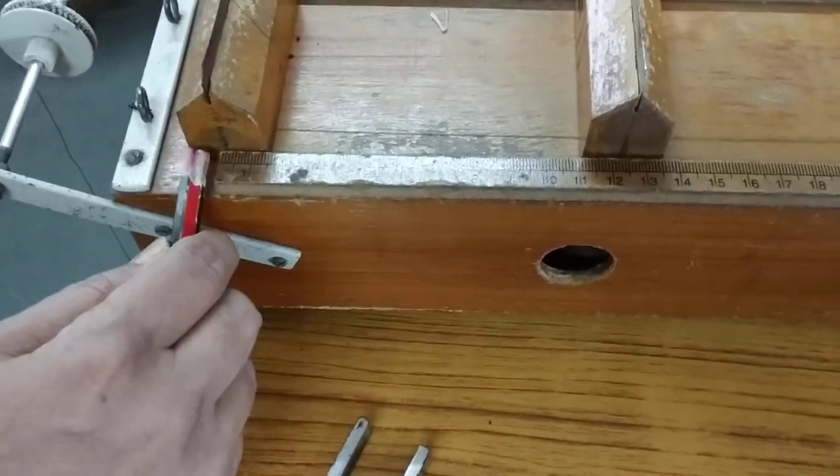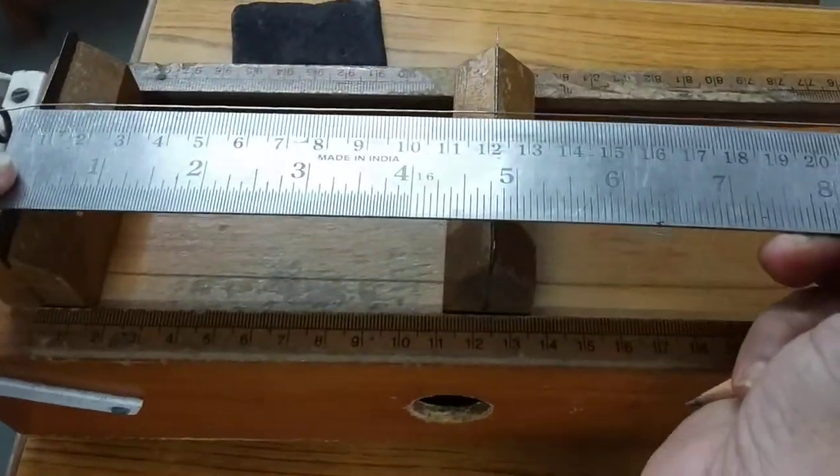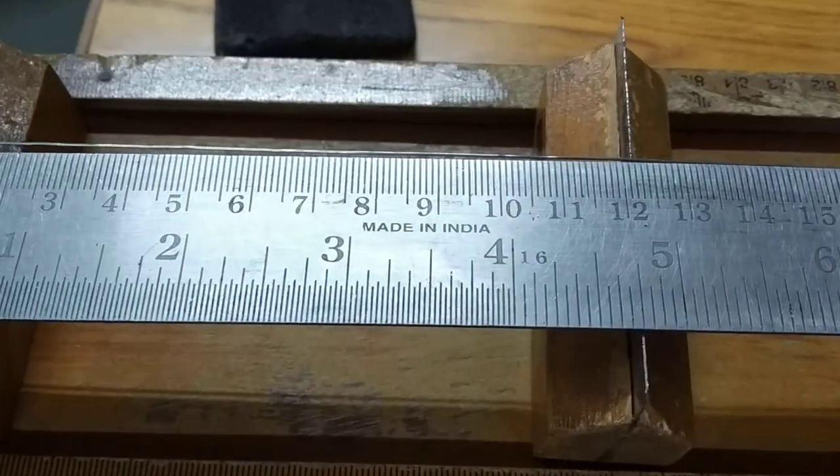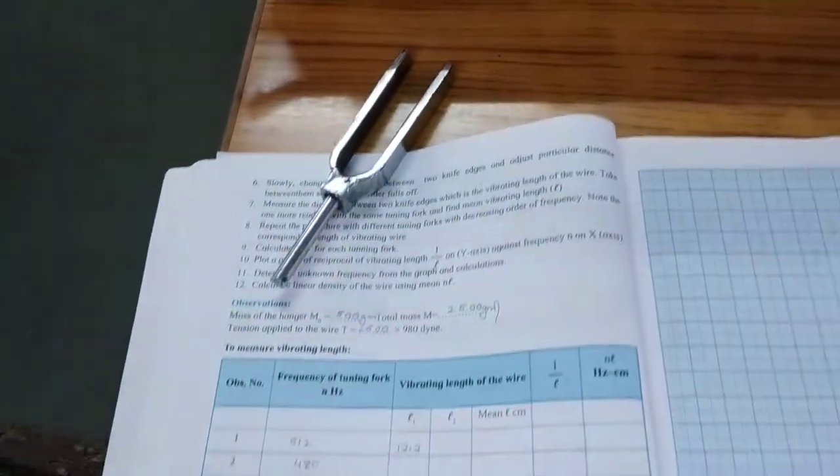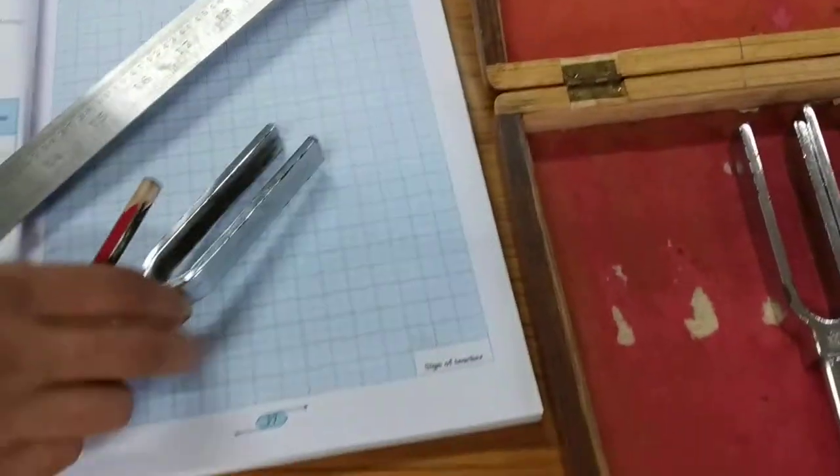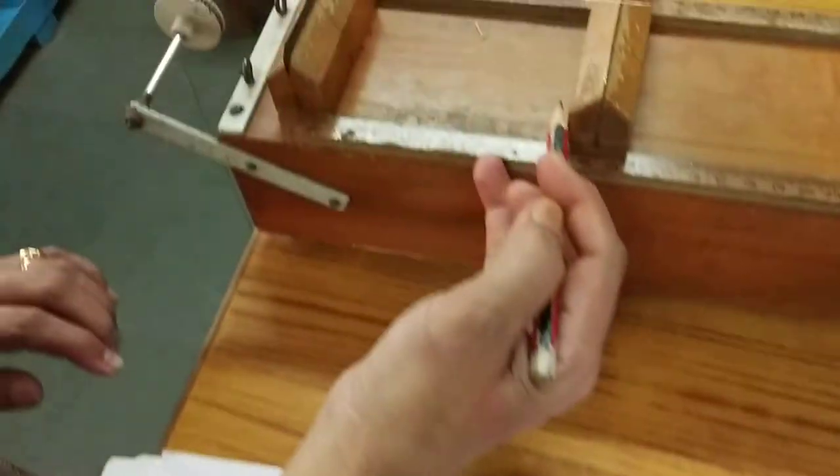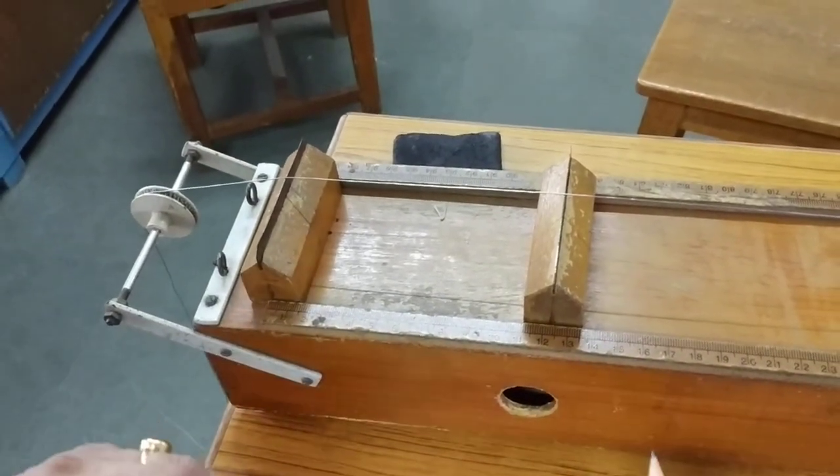You can also measure the length like this using another ruler if you are not taking this as 0. If we are choosing these two knife edges at the center, then you can use a ruler like this to measure the length between these two. Like that, we are going to take readings with all the tuning fork. The length will go on increasing as the frequency goes on decreasing.